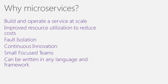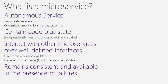With that in mind, how would we define a microservice? There is no real definition, but leading industry experts generally agree on the following. A microservice is an autonomous, independent service that encapsulates a business scenario. It contains the code and state — a microservice even contains its own datastore, which makes it truly independently versionable, deployable, and scalable. A microservice is loosely coupled and interacts with other microservices through well-defined interfaces using protocols like HTTP. They remain consistent and available in the presence of failure, meaning even if the machine goes down that hosts a microservice, the functionality provided by the service should still be offered by the application.